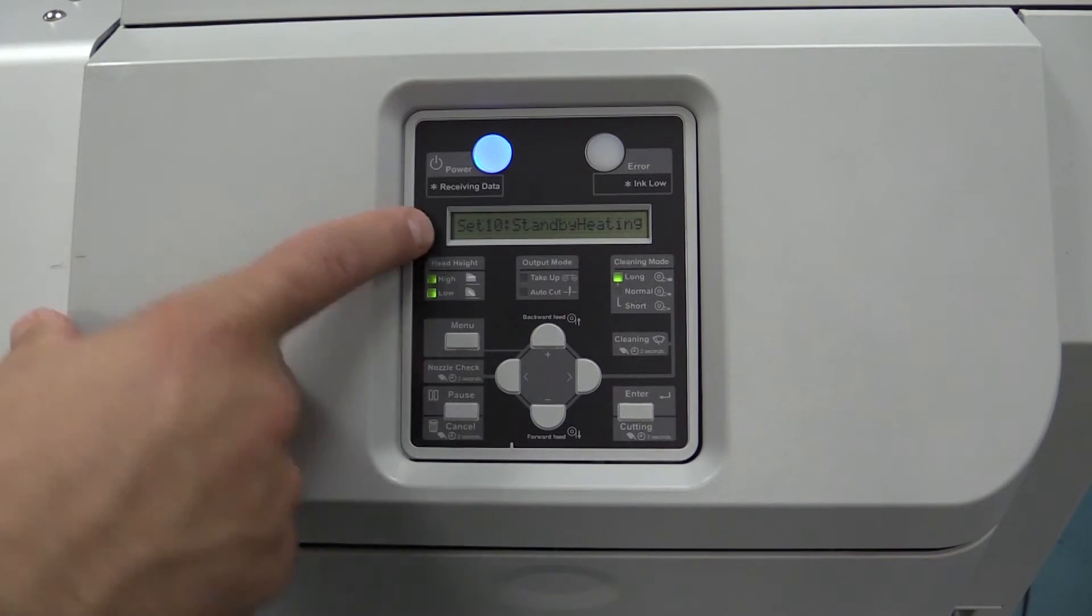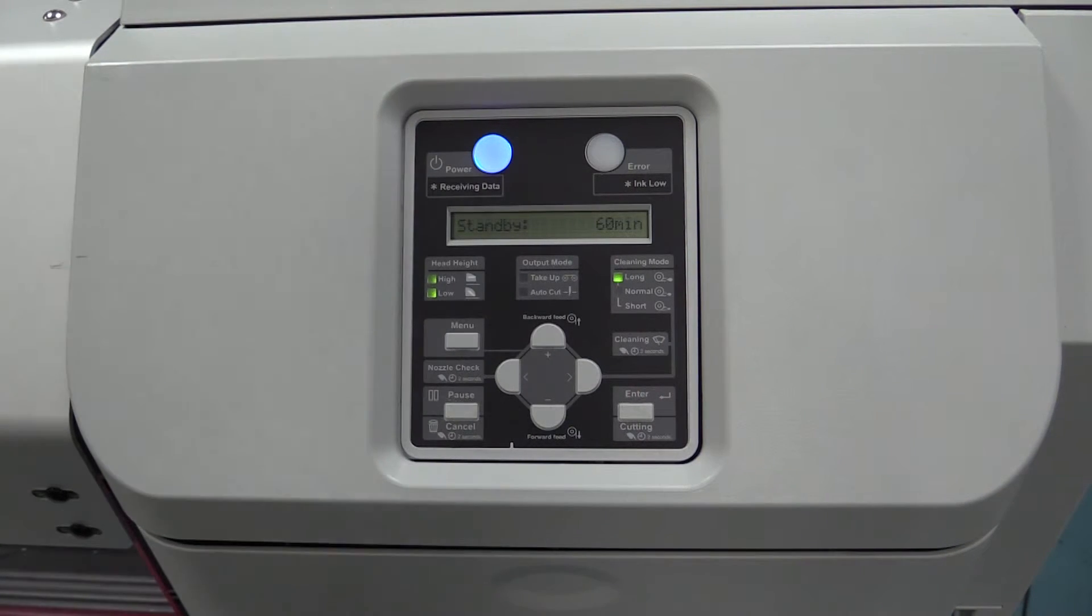Setting 10, this is important. This is standby heating. As it's in standby between print jobs, how long do you want it to maintain heat? What this does is minimize your downtime. If you keep the heat up for a longer period between jobs, it prevents you having to wait for it to heat up again. I recommend leaving it set to 60 minutes, which is the maximum. That way, if you're between jobs but still working, it maintains that heat so you're not waiting five minutes for it to warm back up.